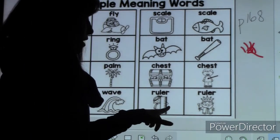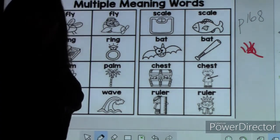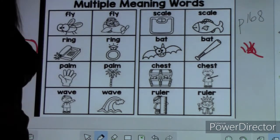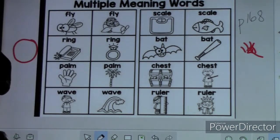Ruler, like the ruler we measure with. And a king or a queen can be a ruler. That means they make the laws and the rules for a society. Those are some examples of multi-meaning words.